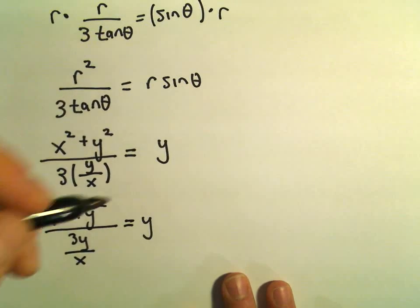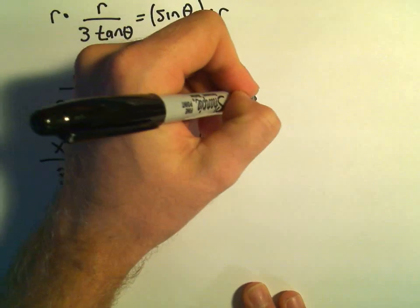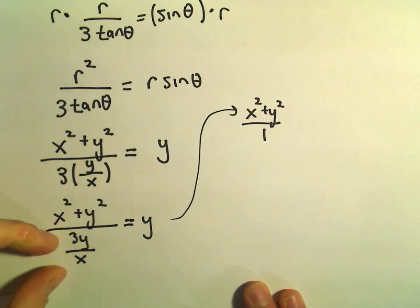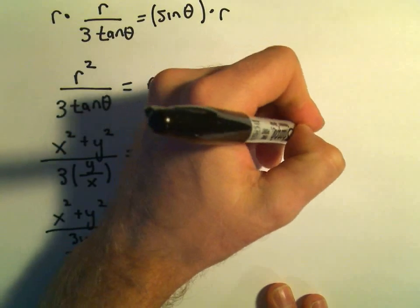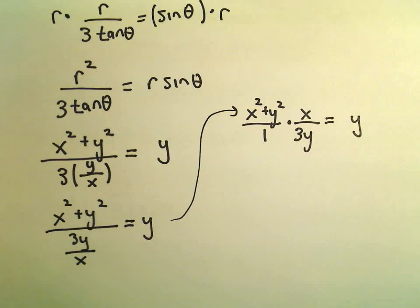I think what I'll do on the left side is think about the numerator as being (x² + y²)/1. Well, since we're dividing by 3y/x, that would be the same thing as multiplying by x/(3y). And we still have our y left over on the right side.